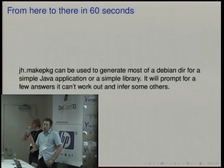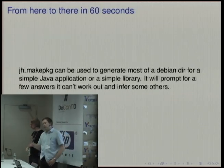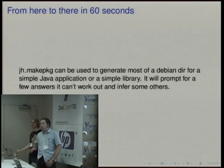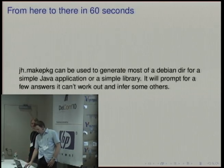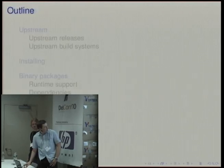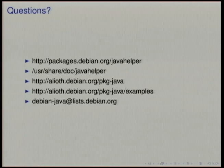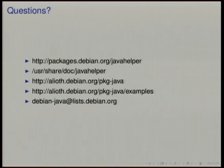jh_makepackage works well if it doesn't need a lot of extra tweaking. If you don't have a working build system and you need to patch it or give it unusual arguments, you're going to need to tweak it a bit. Java Helper contains documentation in the package installed in the obvious place. There's a website and a mailing list if you want to ask questions. There will shortly also be a series of examples giving you all the packaging needed to build and install a simple package with various different build systems.